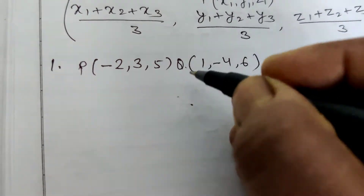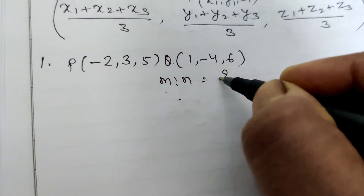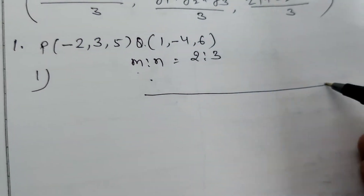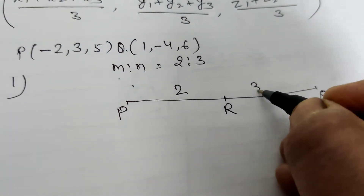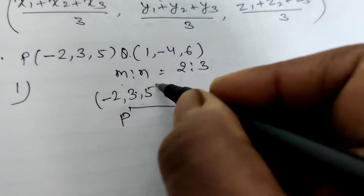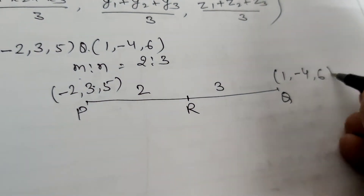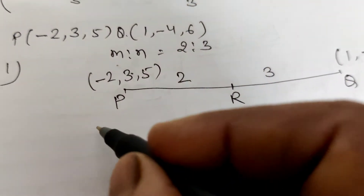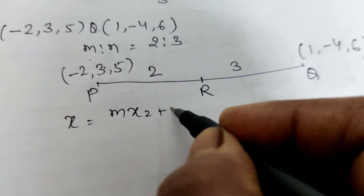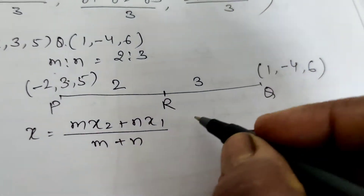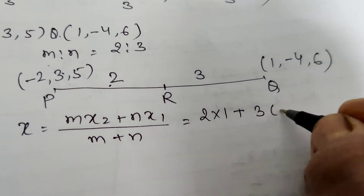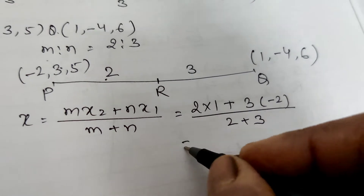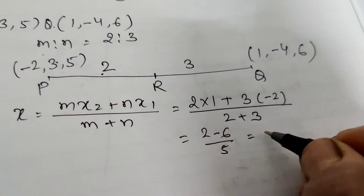The points given are P and Q. Divide in ratio 2 to 3, so m to n = 2 to 3. First, internally. Point P is (−2, 3, 5) and Q is (1, −4, 6), with R dividing in ratio 2 to 3. X coordinate = (m·x2 + n·x1) / (m + n) = (2×1 + 3×(−2)) / (2 + 3) = (2 − 6) / 5 = −4/5. Y coordinate = (m·y2 + n·y1) / (m + n) = (2×(−4) + 3×3) / 5 = (−8 + 9) / 5 = 1/5.